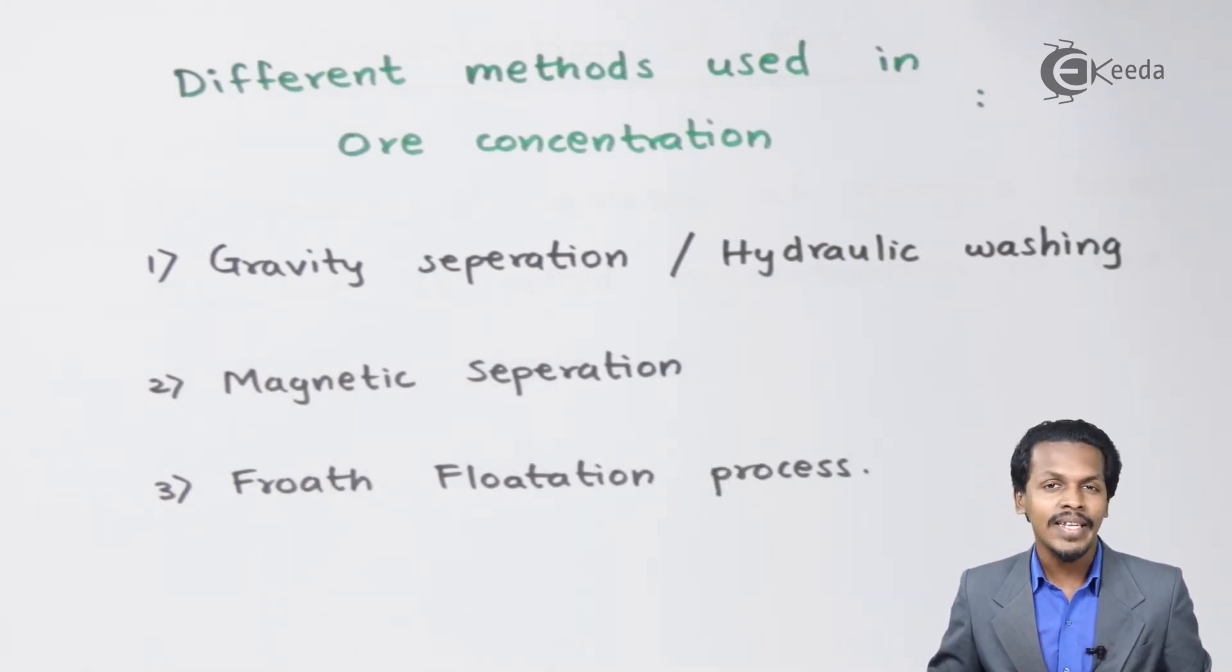Now let me talk about magnetic separation. This is also a very important and simple process. The ore consists of metals as well as non-metals, and non-metals can be the impurity.